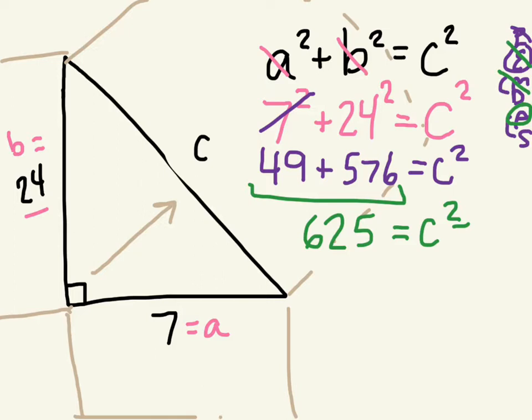We know when we have something being multiplied by X, we get rid of it by dividing. When we have something being subtracted, we add. So we need to do the opposite of squaring. And the opposite of squaring is finding the square root.